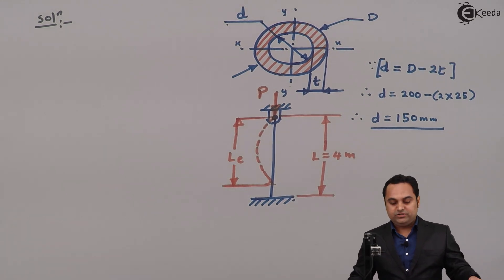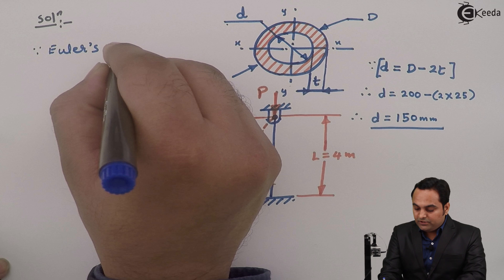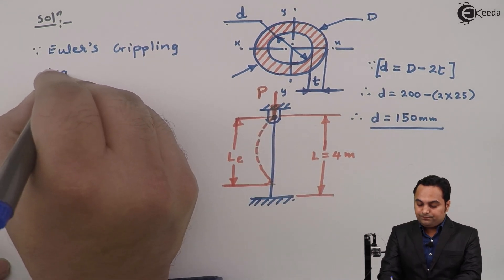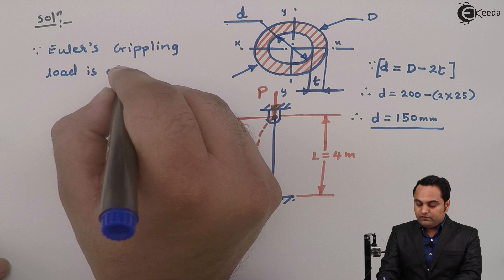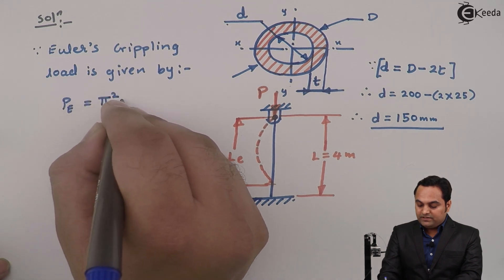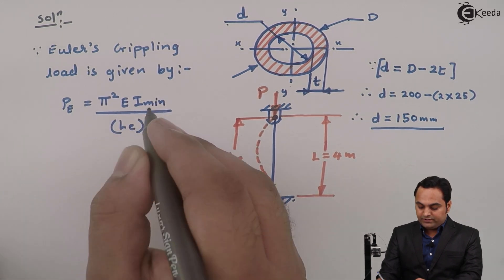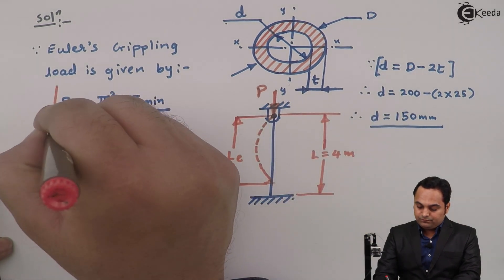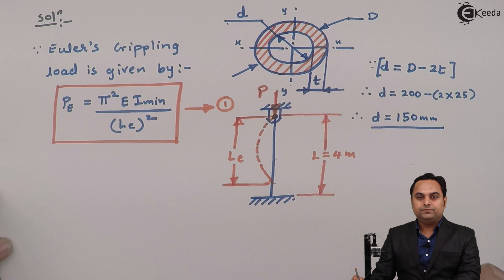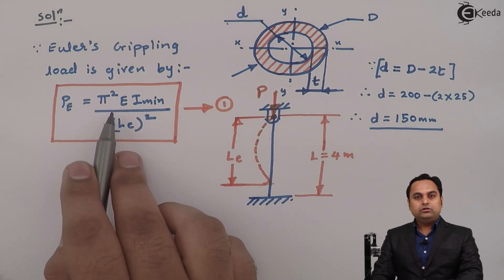Since we need to find Euler's crippling load, also called Euler's buckling load, we use Euler's formula: P_E = π²EI_min / L_e², where L_e is the effective length. This is equation number one.